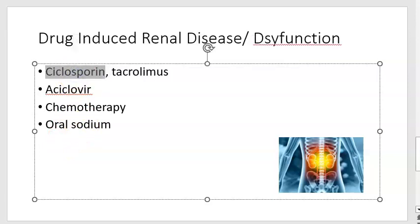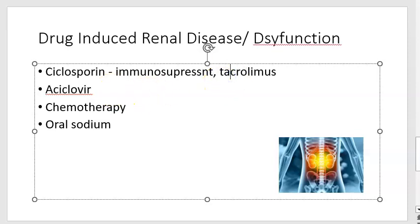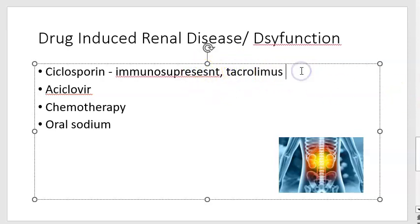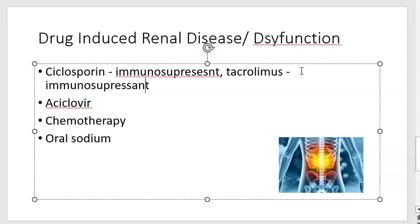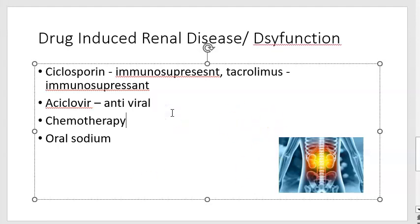Then there is cyclosporine — note the spelling — which is an immunosuppressant. Tacrolimus is also an immunosuppressant. Acyclovir is an antiviral, used for herpes simplex and chickenpox, which is also a herpes virus.